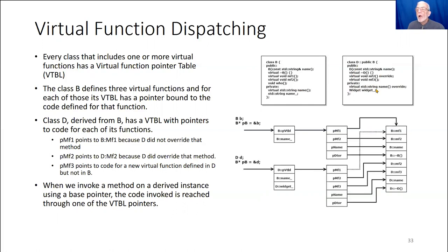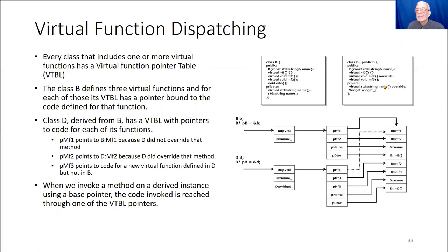The point of overriding this private function: D can override it, it can't access it directly. What that means is that when member function one calls string, if it's called on a derived class object, it'll use the derived version of this private function. So D can't call it, but when a base pointer calls it and it's attached to a derived object, it's going to use the overridden virtual function, even though it's private. D also has another data member, widget, presumably used in MF3.